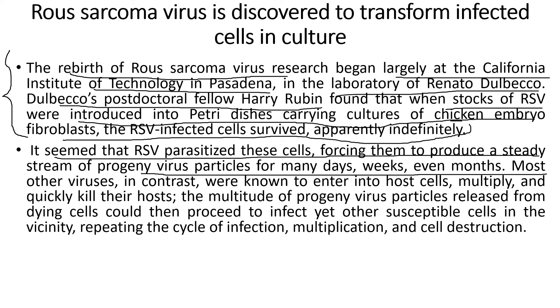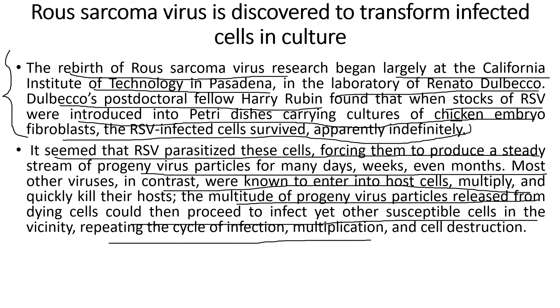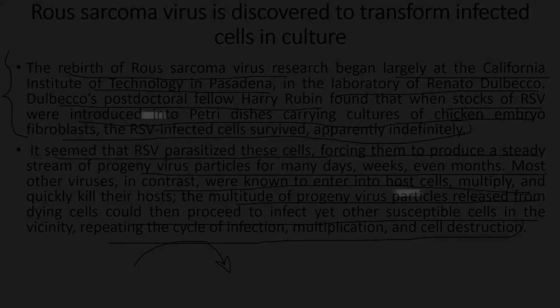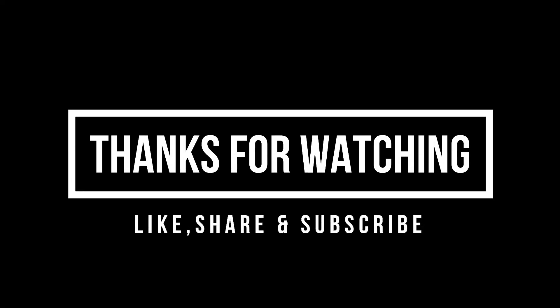Most viruses, in contrast, were known to enter host cells, multiply, and kill those host cells. The multitude of progeny virus particles released from the dying cells would then proceed to infect yet other susceptible cells in the vicinity, repeating the cycle of infection, multiplication, and cell destruction. This is the simple cycle that follows for every other virus. Hope you enjoyed this video — please give it a like, share, and subscribe. Thanks for watching!